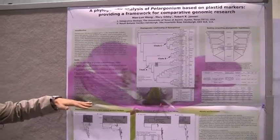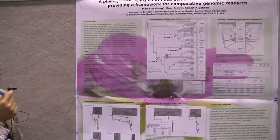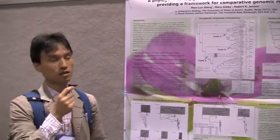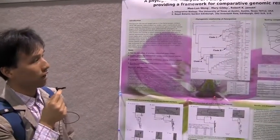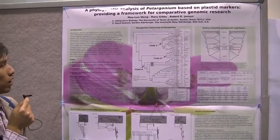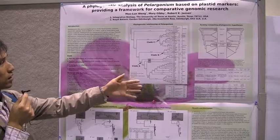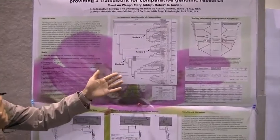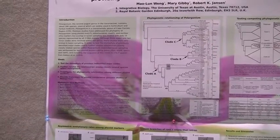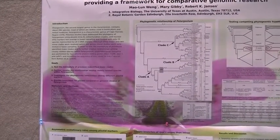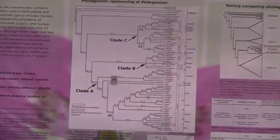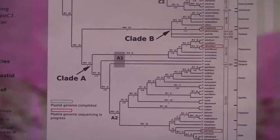The first part of my research is trying to construct a phylogenetic of this genus. I used five plastid markers to construct the phylogenetic, and what I got is a very good phylogenetic of this genus with well-supported major clades. However, there is one clade called A1 that is unresolved in my data.